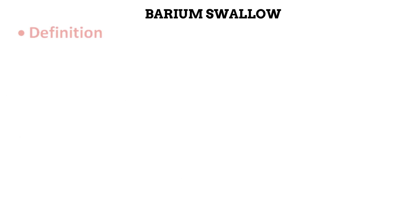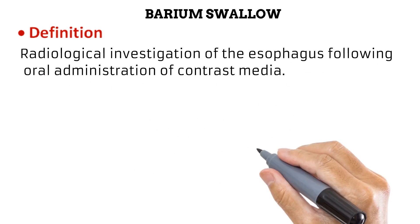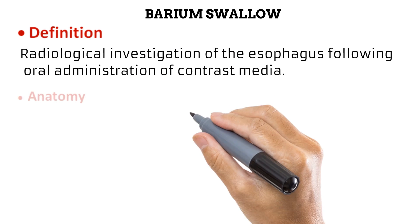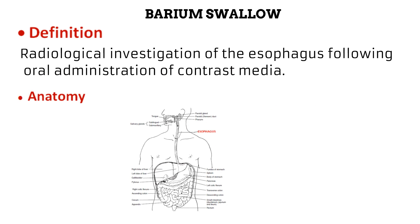The barium swallow is a radiological investigation of the esophagus following oral administration of contrast media. The esophagus is an important part of the upper digestive system. It is a muscular tube about 24 cm long and 1.9 cm wide. It runs from the laryngopharynx to the stomach, and by doing so it conveys food from the mouth and pharynx to the stomach.